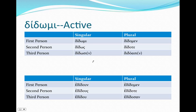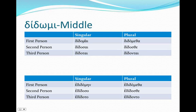In the active voice, we're going to have two different stems — a long version and a short version — and that will be for both the present and imperfect. But in the middle, it's only going to be the short stem. The endings are added right onto that stem — no theme vowel. Remember, these are athematic verbs.